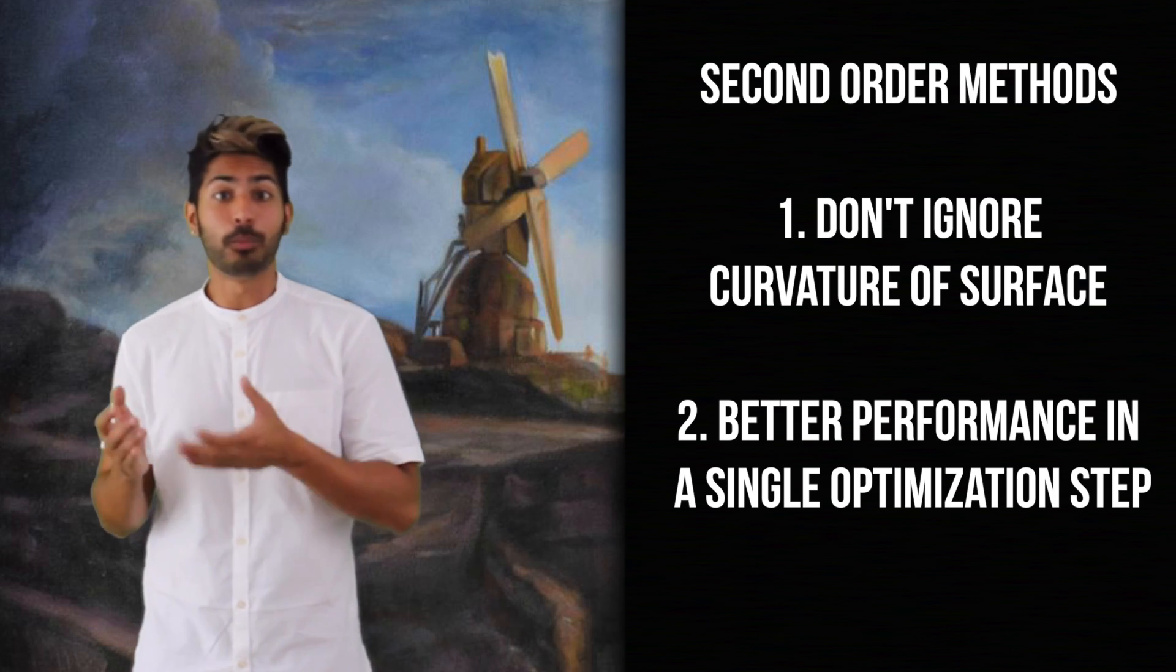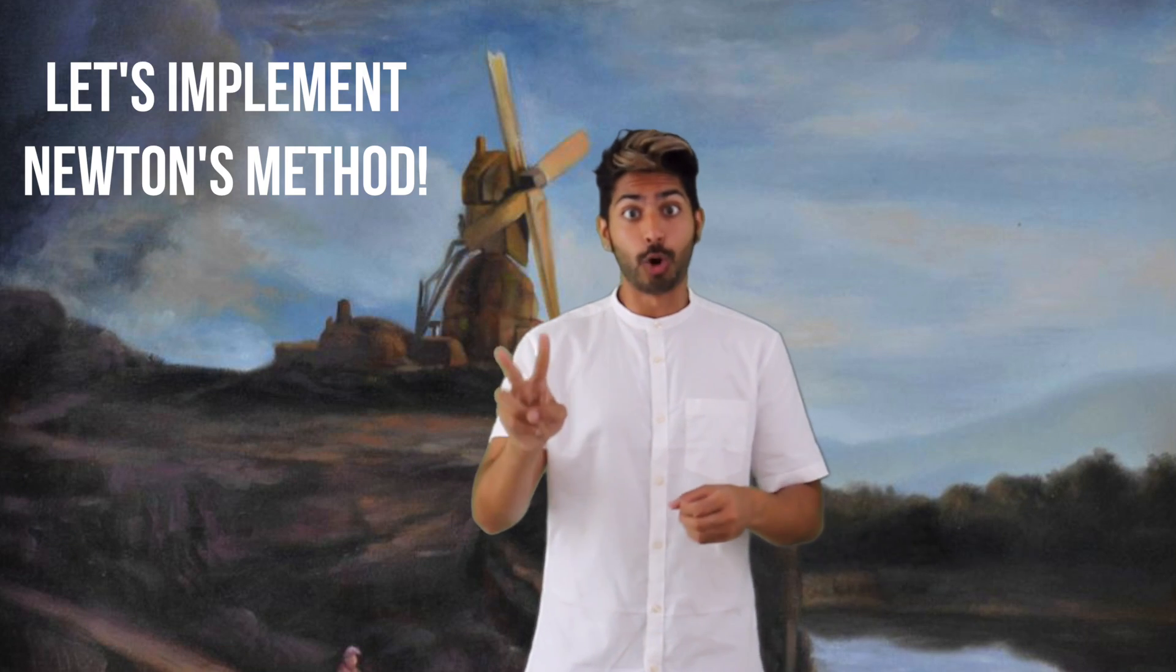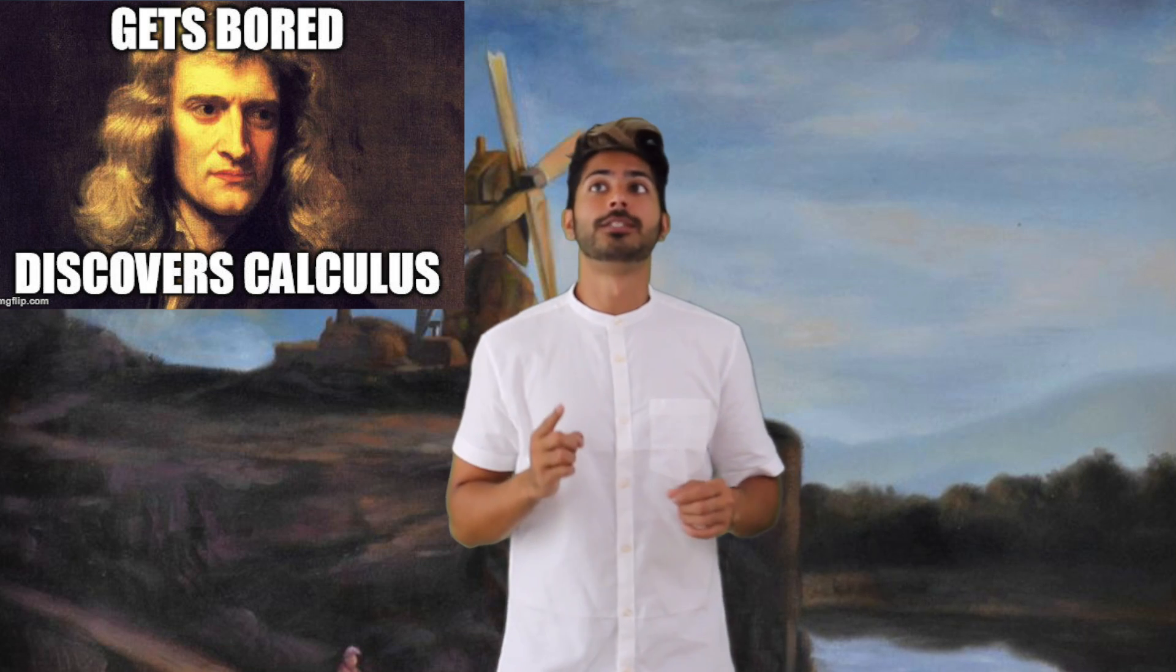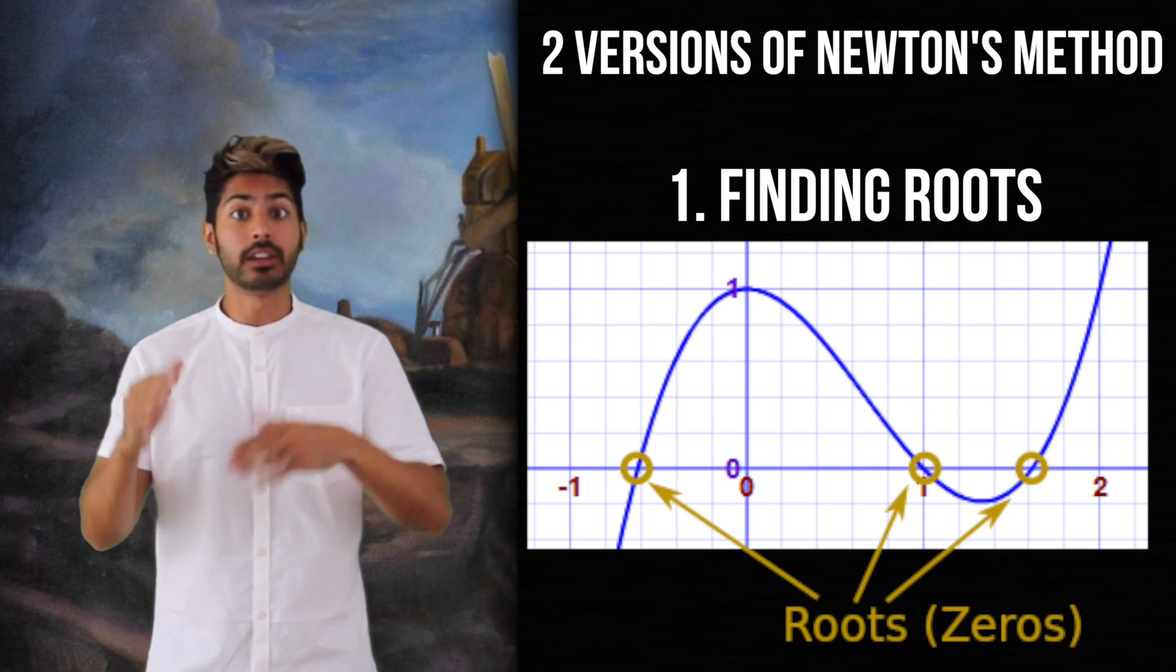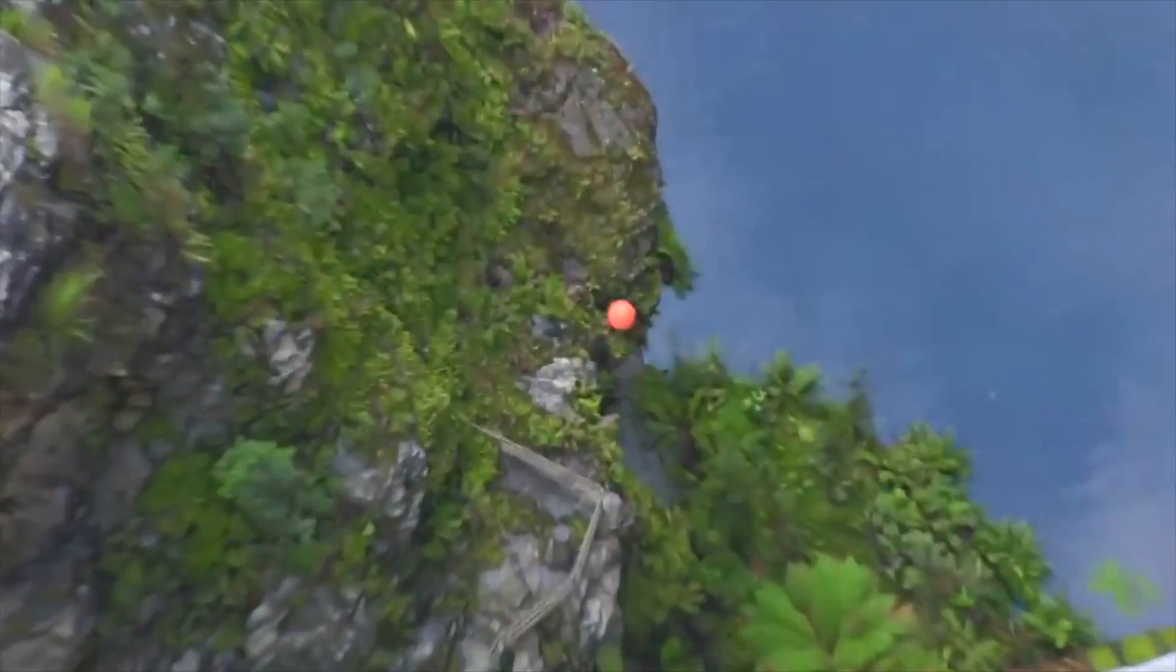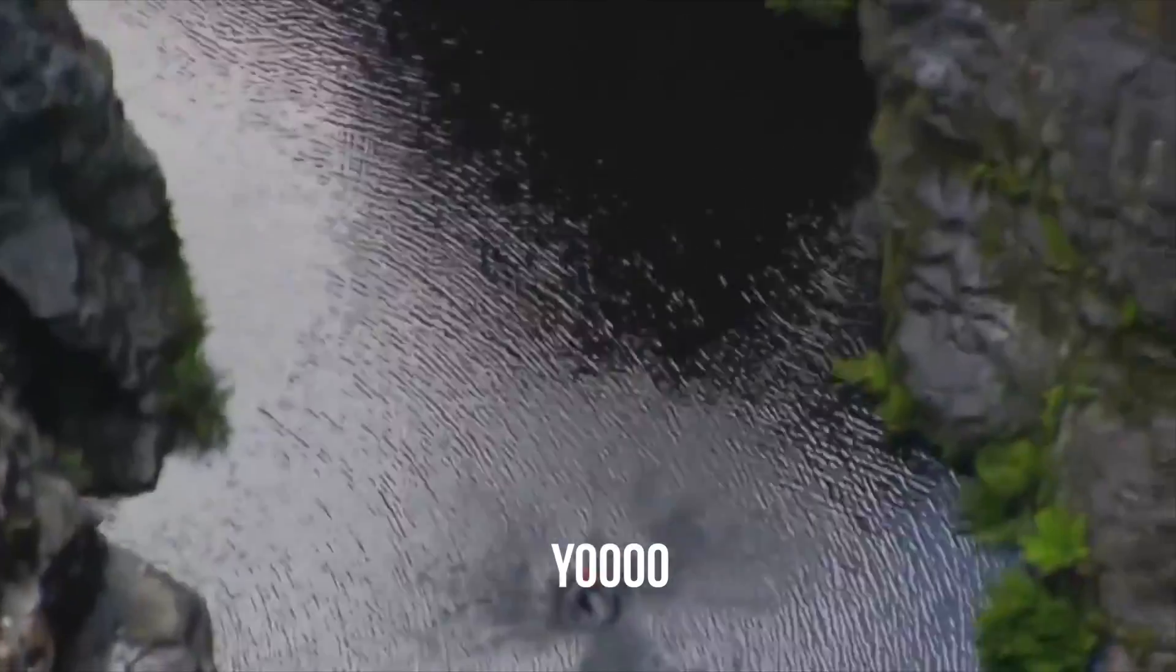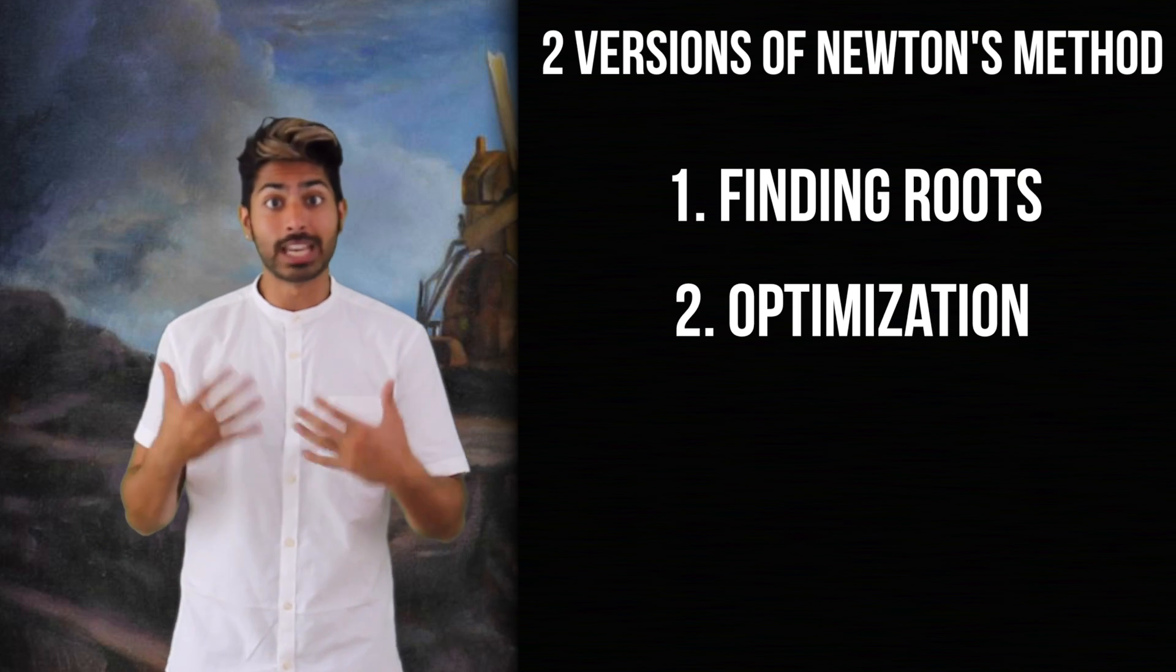And in terms of step-wise performance, they are better. Let's look at a popular second-order optimization technique called Newton's method, named after the dude who invented calculus. There are actually two versions of Newton's method. The first version is for finding the roots of a polynomial, all those points where it intersects with the x-axis. So if you threw a ball and recorded its trajectory, finding the roots of the equation would tell you exactly what time it hits the ground. The second version is for optimization, and it's what we use in machine learning.